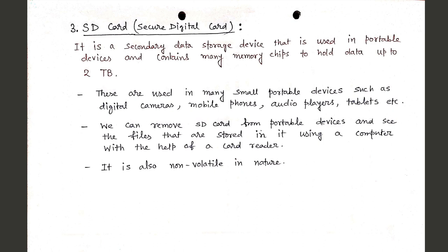An SD card (Secure Digital Card) is a secondary data storage device used in portable devices and contains memory chips to hold data up to 2 TB. SD cards are used in small portable devices such as digital cameras, mobile phones, audio players, and tablets. We can remove an SD card from a portable device and access stored files on a computer using a card reader. It is also non-volatile in nature.